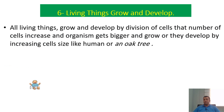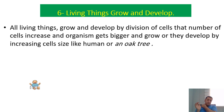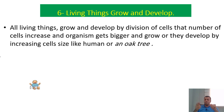All living things grow and develop by division of cells — the number of cells increases and organisms get bigger. Importantly, the size of each cell does not increase; only the number of cells increases. For example, a mouse and an elephant have the same cell size, but the elephant has far more cells than the mouse — perhaps a million compared to a hundred.